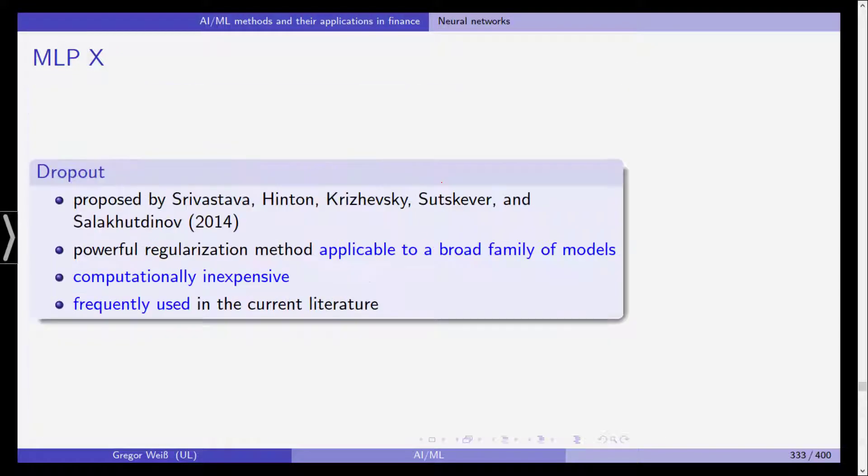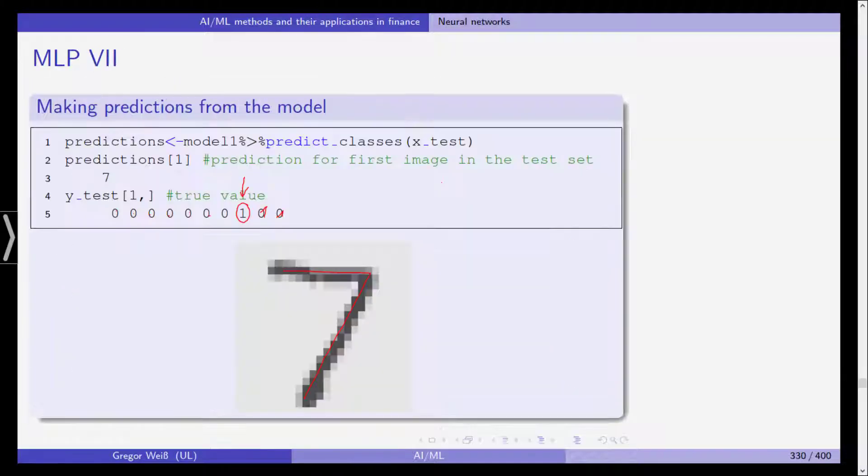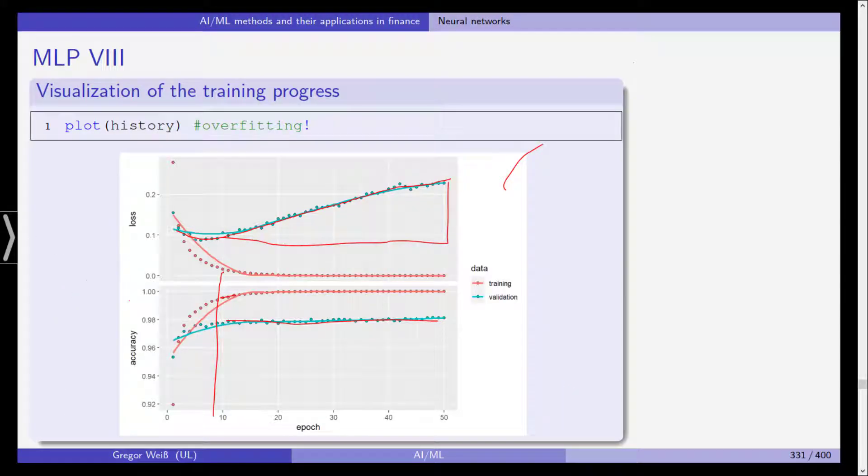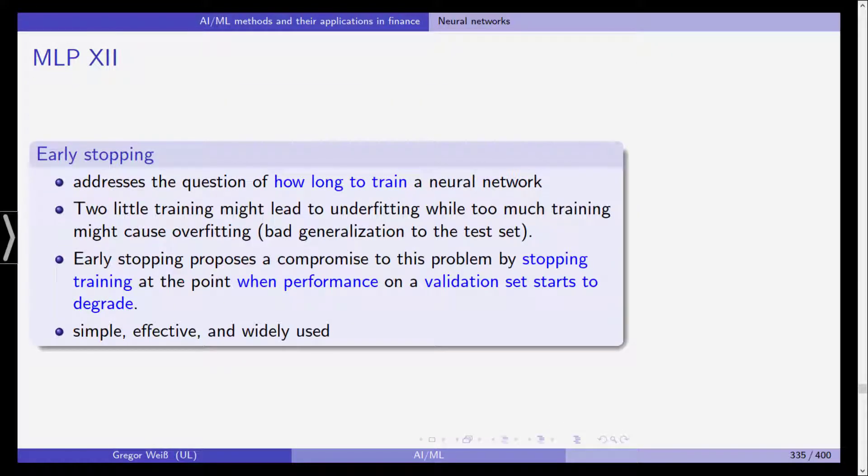Too little training might lead to underfitting. If we had stopped earlier, let's say after maybe five epochs or three epochs, and if we stop too late we get overfitting. Early stopping proposes a compromise by stopping training at the point when performance on the validation set starts to degrade. It's very simple, very effective and widely used.